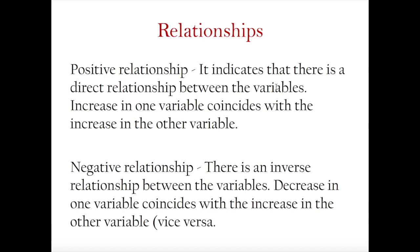When we talk about relationships, one aspect is the direction. There are two possible directions. A positive relationship indicates that an increase in one variable coincides with an increase in the other variable. For example, an increase in stress might be related to an increase in anxiety — that is a positive correlation.